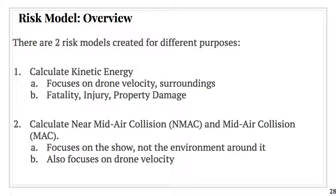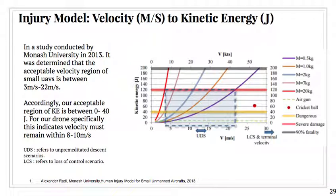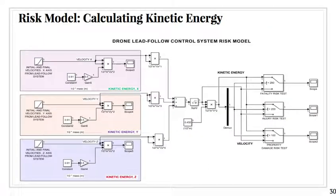And on to the risk model. The risk model is divided into two main sections. We first focus on the kinetic energy model, which focuses on the velocity and the surroundings of the drone itself. Basically we go into the fatality, injury, and property damage for drones. Then the second risk model calculates the near-mid-air collisions and the mid-air collisions for the drones, which also focuses on the show, but not the environment around it. This chart on the right shows the velocity to kinetic energy. It's a study that was conducted by Menashe University in 2013, and it shows us the acceptable velocity region.